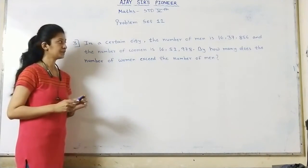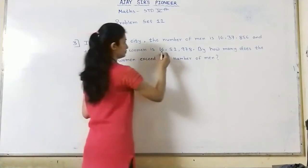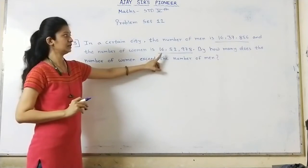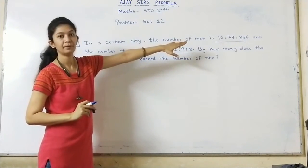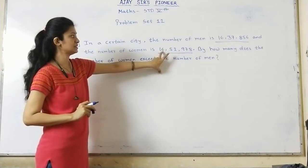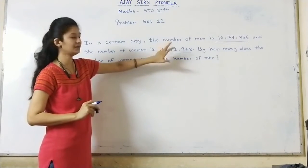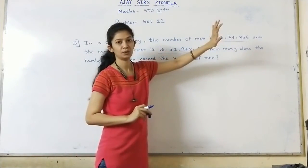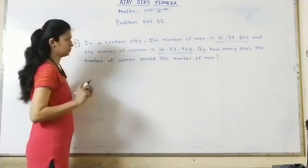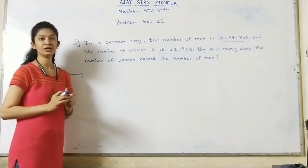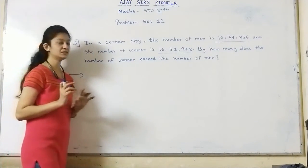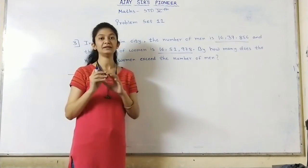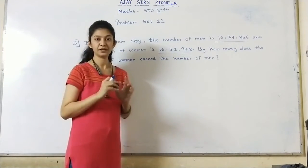By how many does the number of women exceed the number of men? Exceed means more than. If we notice, the number of women is more than the number of men. 16,52,000 is more than 16,37,000. So in our solution, always remember children, write the bigger number first. In subtraction, write the bigger number on top.